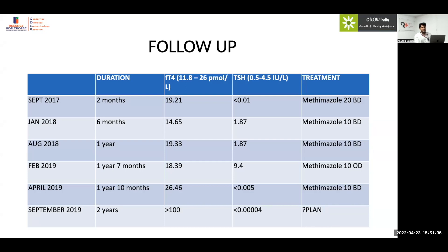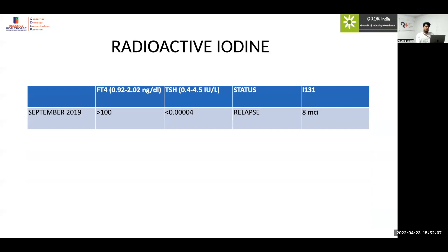The patient was diagnosed with thyrotoxicosis in September 2017 and started on methimazole 20 mg twice daily, approximately 0.6 mg/kg/day. Over the subsequent one to two years, the dose was reduced to a minimum of 10 mg once daily and the patient appeared to be in remission. However, suddenly the dose requirement increased, and even with increased doses, thyrotoxicosis was not controlled. Persistent thyrotoxicosis led to the decision to proceed with radioactive iodine ablation.